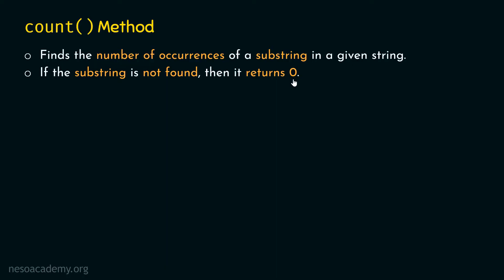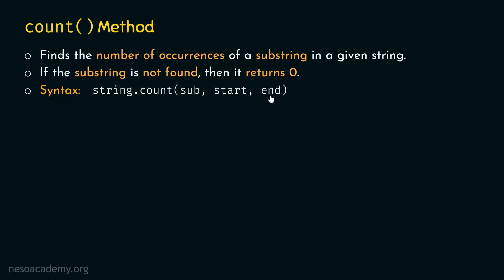The syntax of count method is as follows. First, we need to provide the string, and then we need to apply the count method. To the count method, we can provide three arguments. The first argument is sub, the second argument is start, and the last argument is end. Sub represents the substring which we need to find the number of occurrences of. Start represents the start index from where the search should begin, and end represents the ending index where the search should end. These two arguments are completely optional, while the sub argument is mandatory.